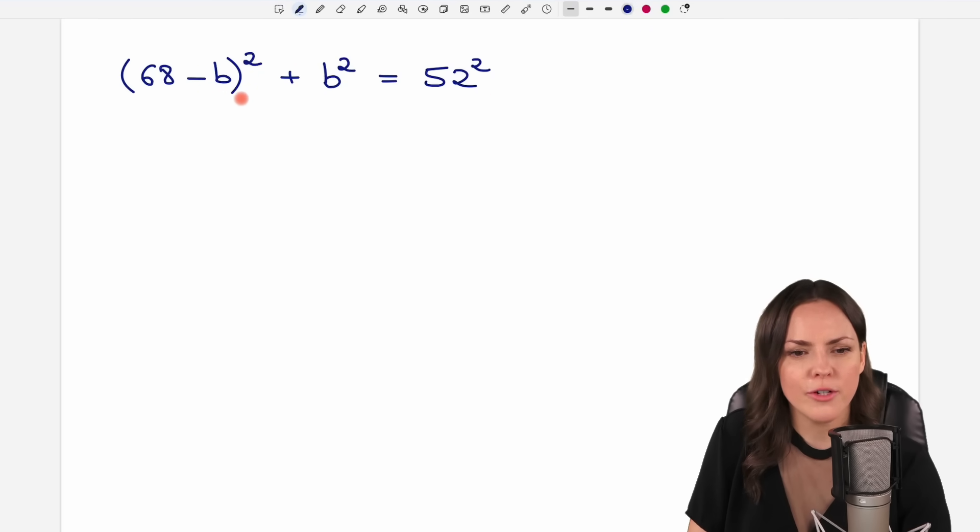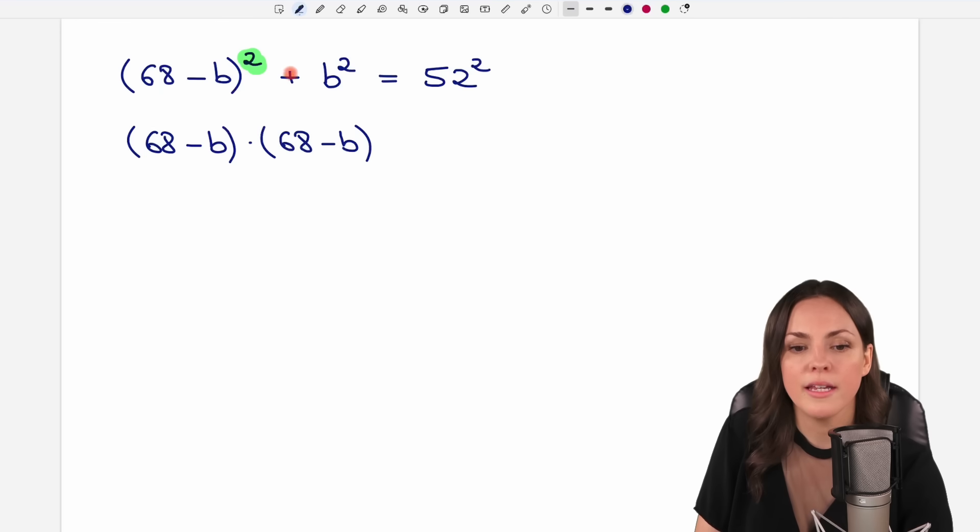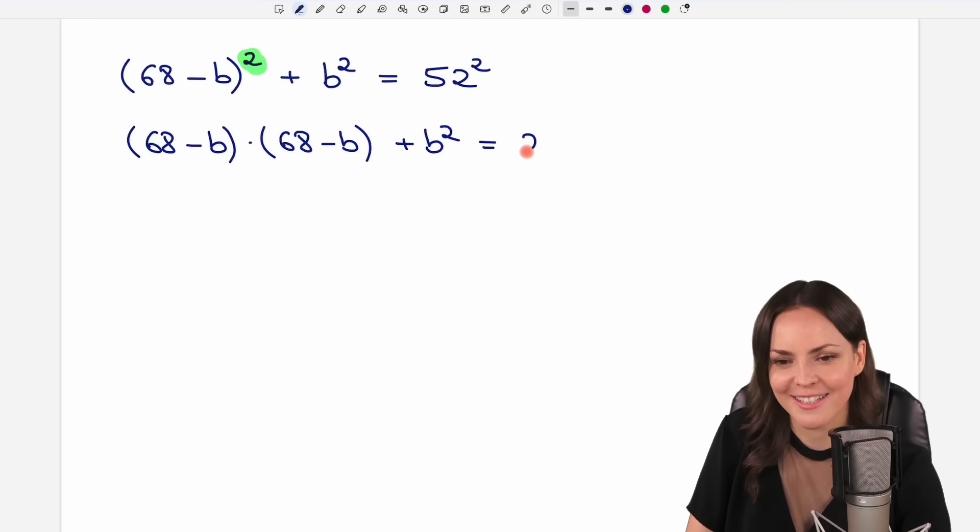So I take this equation and I try to solve it for B. Maybe we first get rid of these parentheses here. So we have parentheses squared, which means that I can write this as I take these parentheses and I multiply them by themselves again. So everything that was in there. Then I have my B squared. And on the other side, 52 squared. We can use a calculator for this. We get a result of 2704.